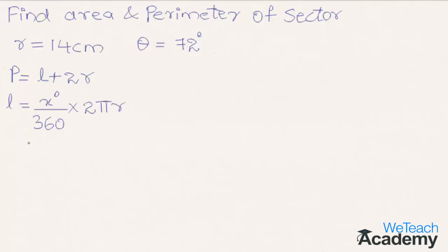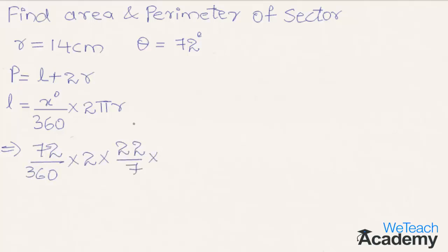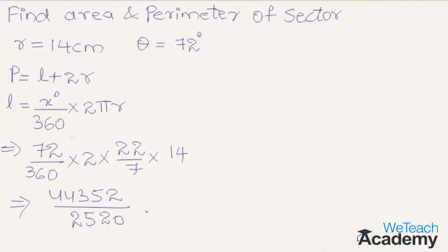By substituting the given values of x and r in the formula we get 72 divided by 360, into 2, into the value of pi that is 22/7, into r that is 14. By multiplying all the terms in the numerator we get 44352 divided by 2520. And by dividing we get the result as 17.6 centimeters as the length of the arc.